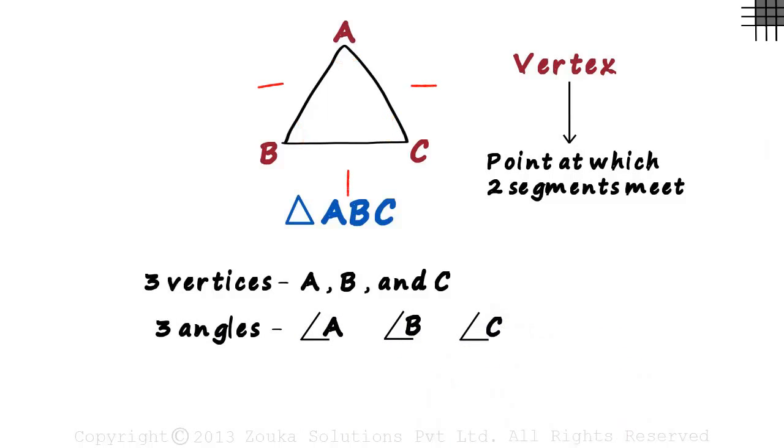A triangle is basically a three-sided closed figure with three angles in its interiors. And how many sides does a triangle have? One, two and three. Three sides. And it has three sides or segments AB, BC and CA.